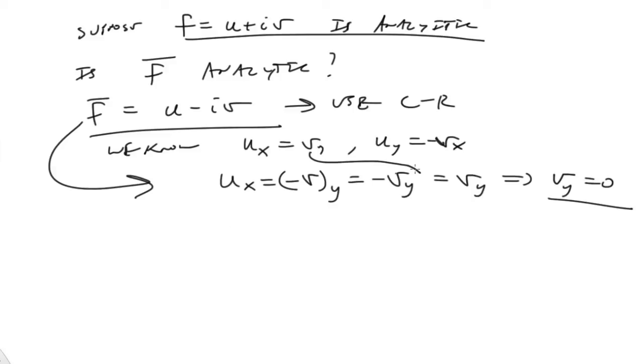And we can do the same thing for the other pair of Cauchy-Riemann equations. uy is equal to negative negative vx. And that's equal to vx, which is equal to negative vx. So it also implies that vx must be equal to zero.